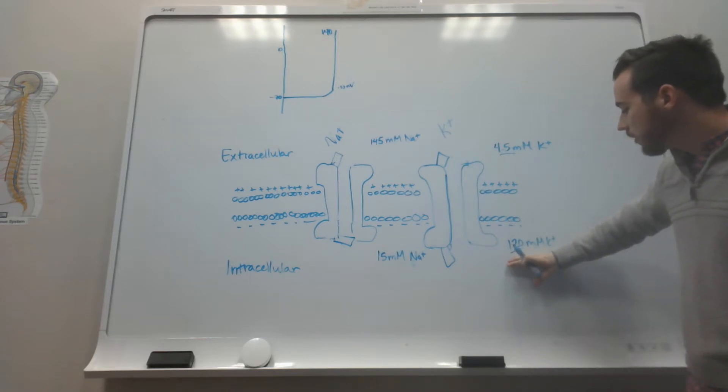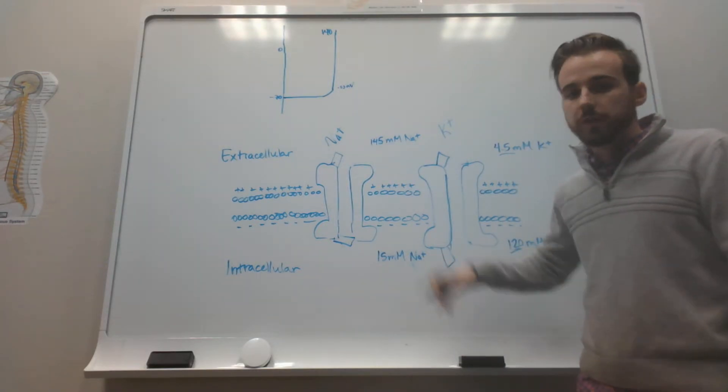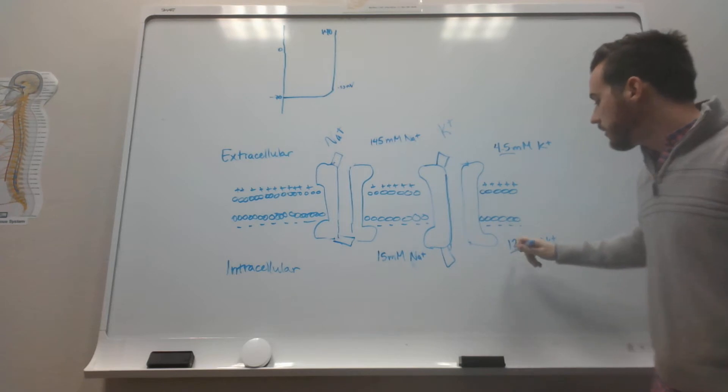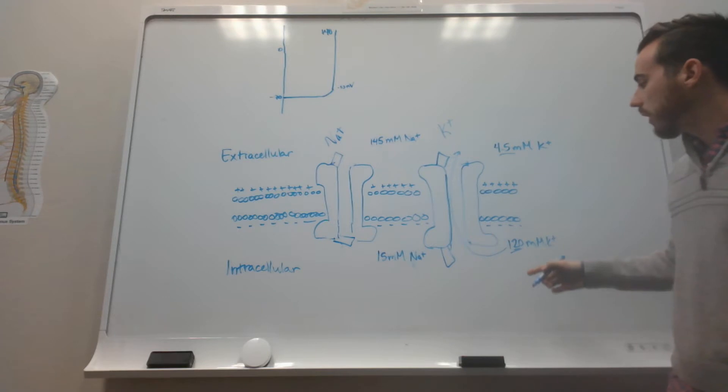On the inside, it has 120 millimolars, and on the outside, it has 4.5. So this is going to want to move down, just like the other one did. But in this case, down means going from inside to out of the cell.